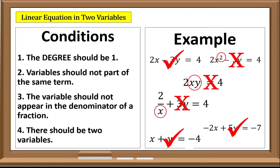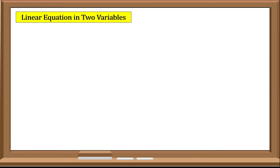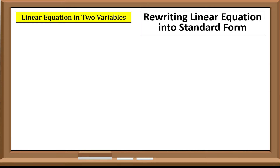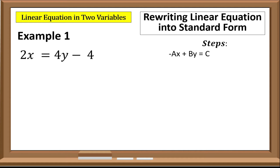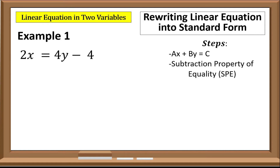Now, in order to identify the values of a, b, and c, we should rewrite the equation into standard form. Let us take this as an example: 2x equals 4y minus 4. Our goal is to arrange the equation into standard form, where the variables x and y are on the left side and the constant is on the right side. We need to transfer the 4y to the left side by applying the Subtraction Property of Equality.